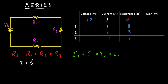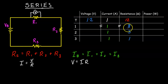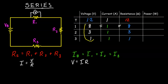Next, to find the voltage across each resistor, we hook up a voltmeter. We use Ohm's Law again: V equals I times R (current times resistance). So the voltage across R1 is 1 times 8 equals 8 volts, across R2 is 1 times 3 equals 3 volts, and across R3 is 1 times 1 equals 1 volt. Adding those up: 8 plus 3 plus 1 equals 12.